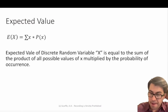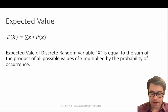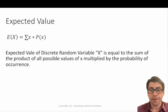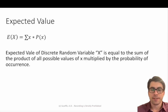The expected value of a discrete random variable X is equal to the sum of the product of all possible values of X multiplied by their probability of occurrence. That's the technical definition, but effectively, expected value is the average of an event that might occur in the long run. So given thousands of attempts, what on average are you expected to see? That is what expected value is.